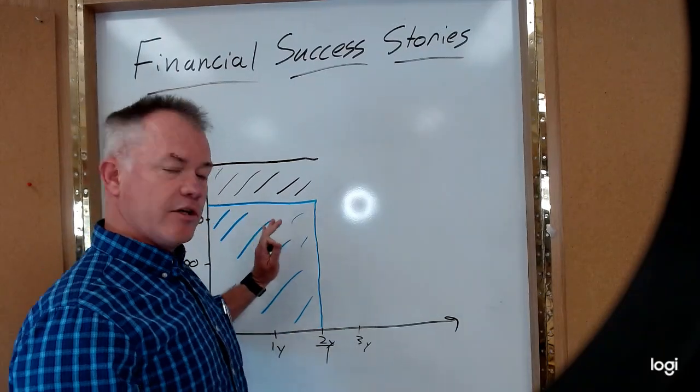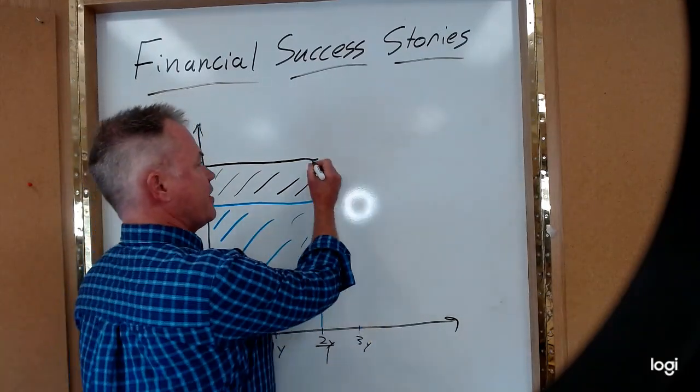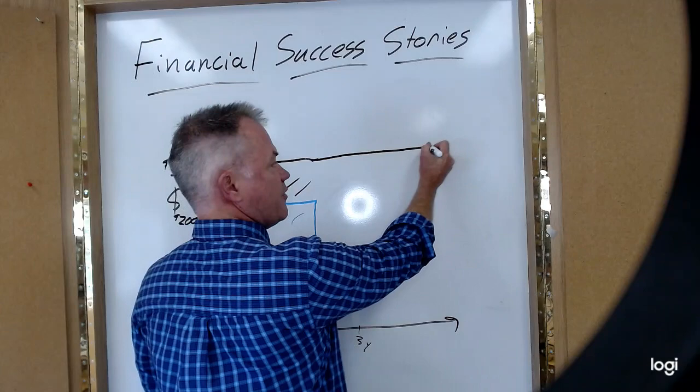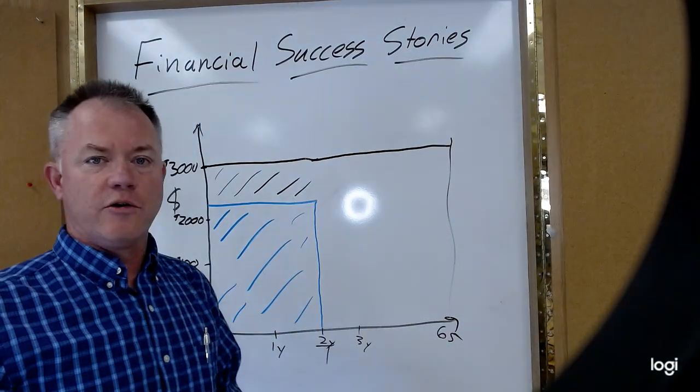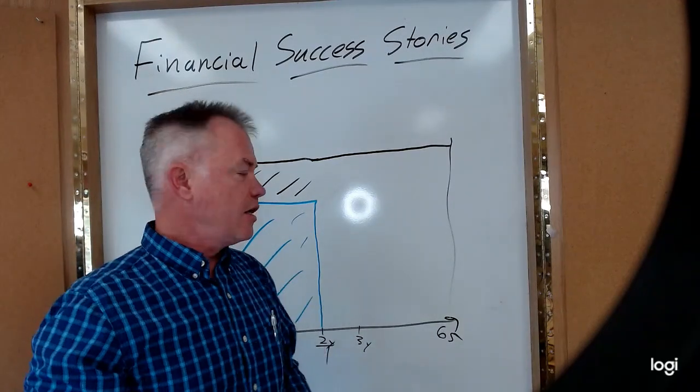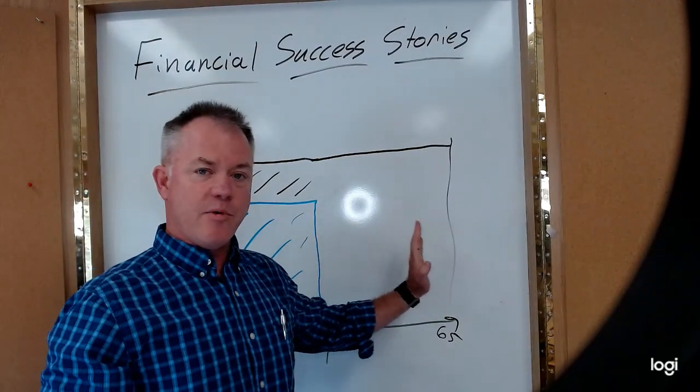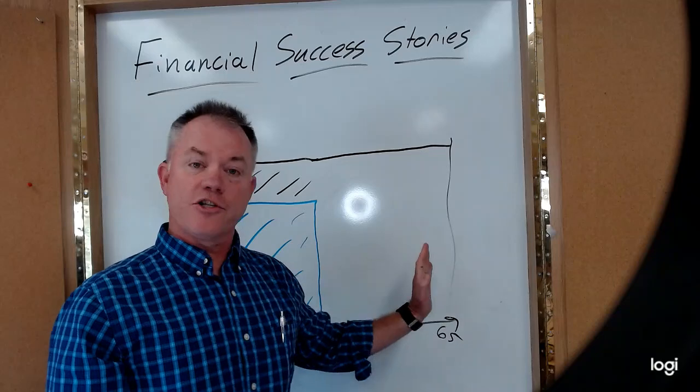So when the group benefit plan dropped off, this one continued all the way to age 65 when her old age security would come on. Now, if A at any point here is able to return to work, she can do so.